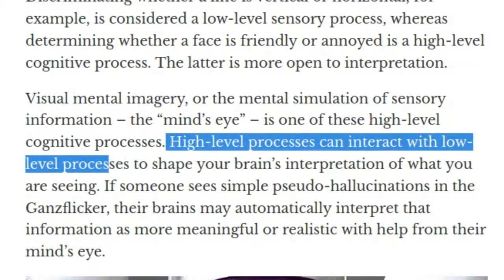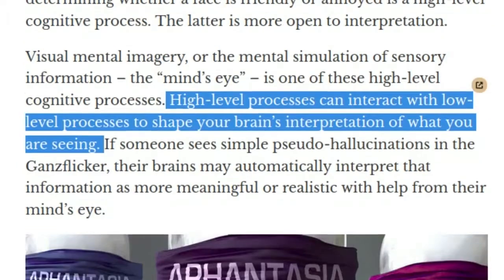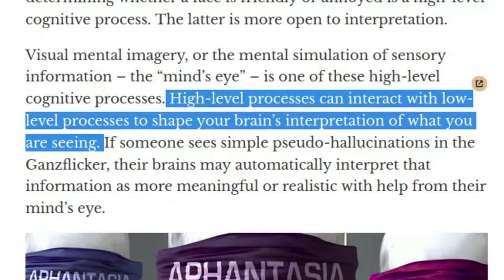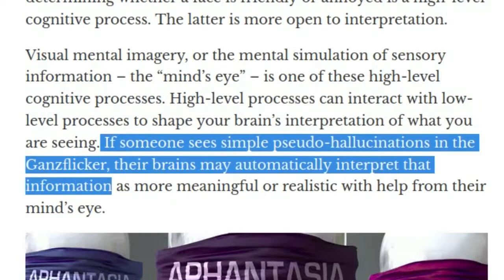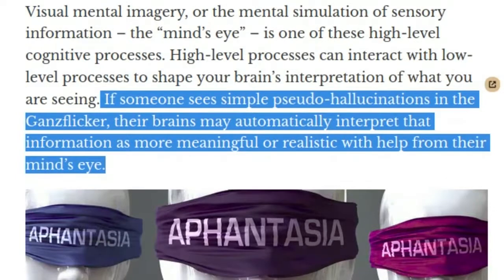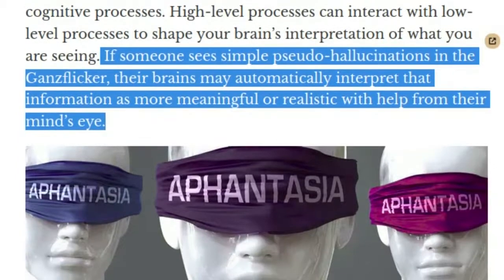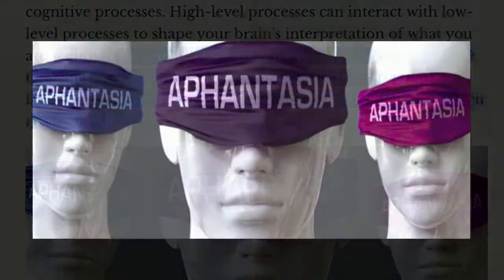High-level processes can interact with low-level processes to shape your brain's interpretation of what you are seeing. If someone sees simple pseudo-hallucinations in the GANs flicker, their brain may automatically interpret that information as more meaningful or realistic with help from their mind's eye.